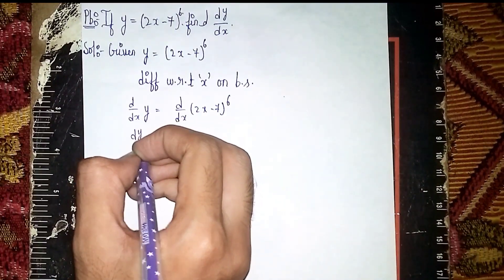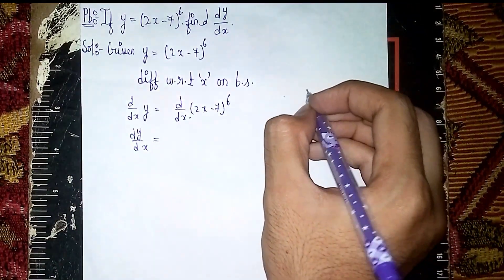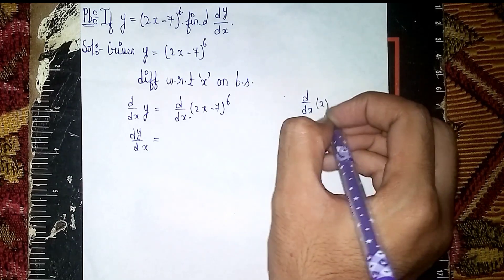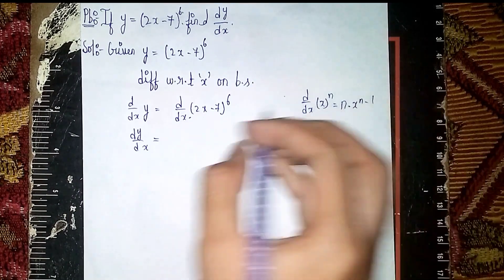This becomes dy/dx is equal to - now here see, we're in the form of d/dx of x^n, which is equal to n·x^(n-1).